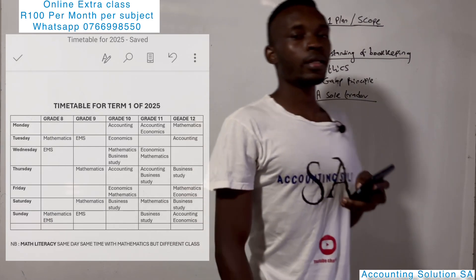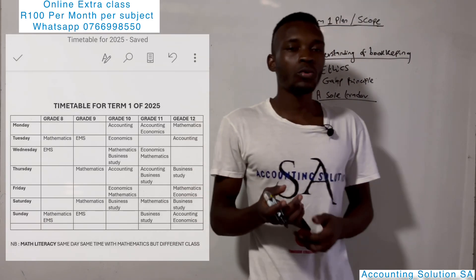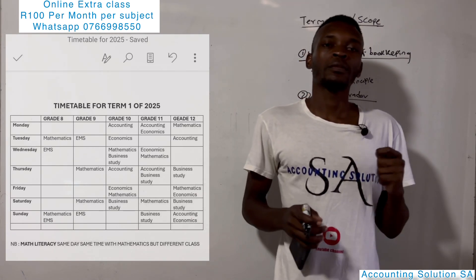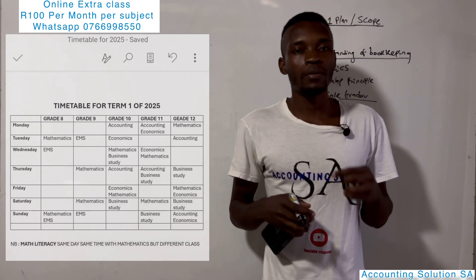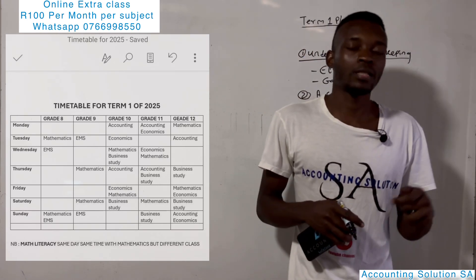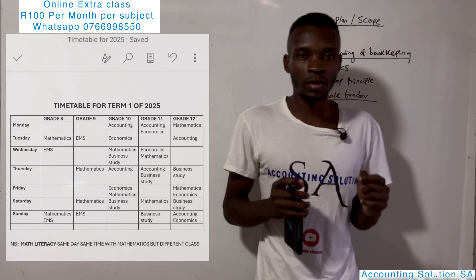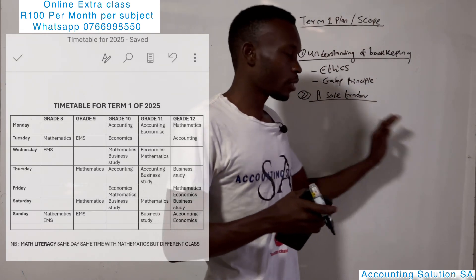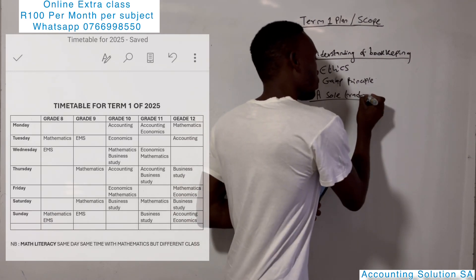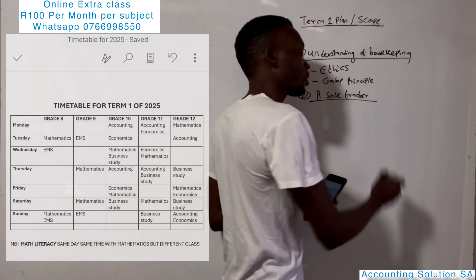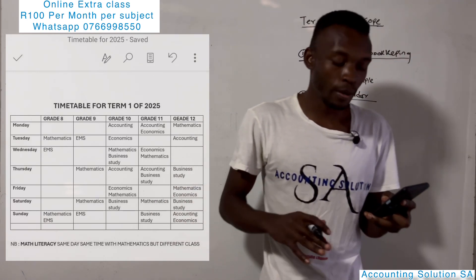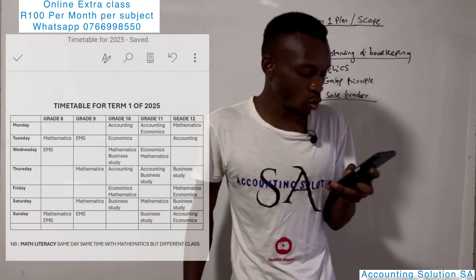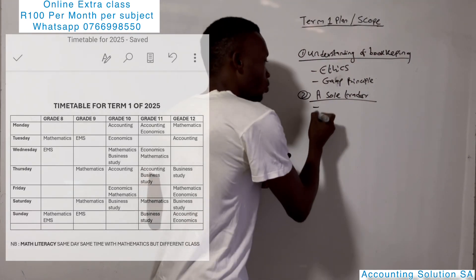In grade 10 you are going to cover a sole trader, which is a business owned by one person. In grade 11 you will cover a partnership, a business owned by two or more members. Then in grade 12 you will cover a company. So for now, for grade 10, let's only focus on the sole trader, meaning the transactions for grade 10 will be related to a business owned by one person.